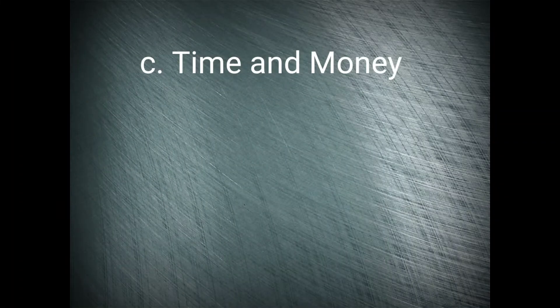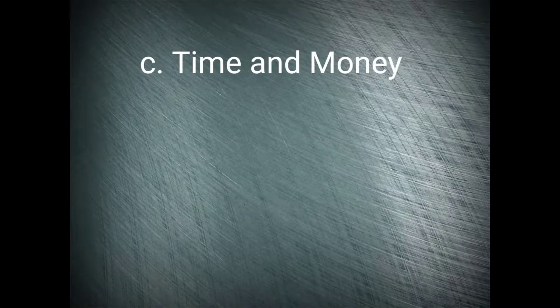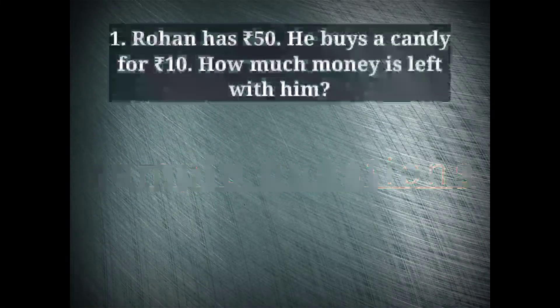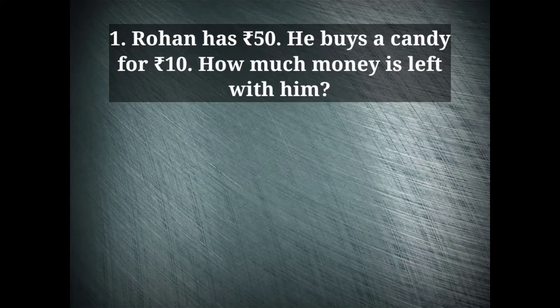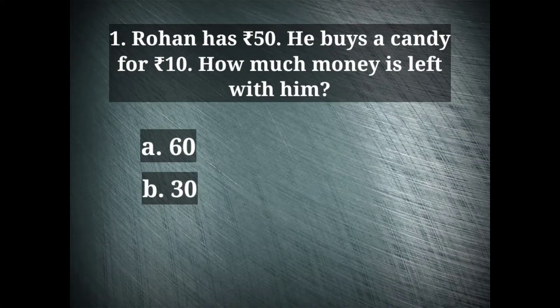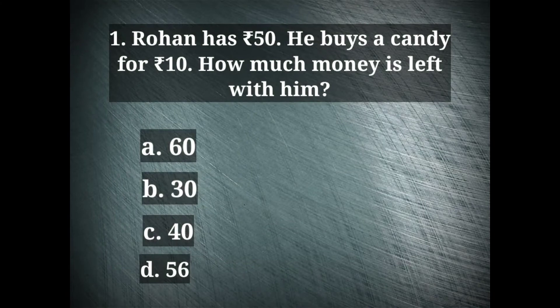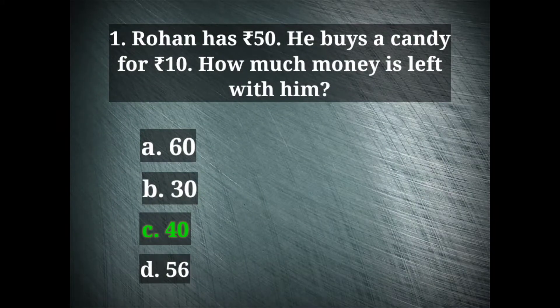Now the next topic is time and money. Some questions about time and money will be asked here. Now let's see some sample questions. Rohan has 50 rupees. He buys a candy for 10 rupees. Now how much money is left with him? The options are 60, 30, 40 and 56. The correct option is 40. Out of 50 rupees he has spent 10 rupees for buying a candy. So, remaining 40 rupees left with him. It is 50 minus 10 that is equal to 40.